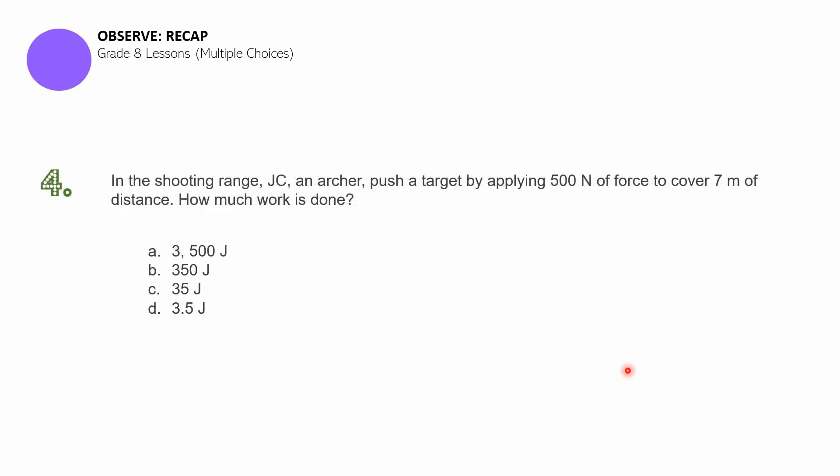Question number four. In the shooting range, Jay-Z, an archer, pushed a target by applying 500 newtons of force to cover 7 meters of distance. How much work is done? Remember, in grade 8, you were supposed to have mastered how to use the formula for work and you were supposed to remember it. A. 3,500 joules. B. 350 joules. C. 35 joules. D. 3.5 joules.